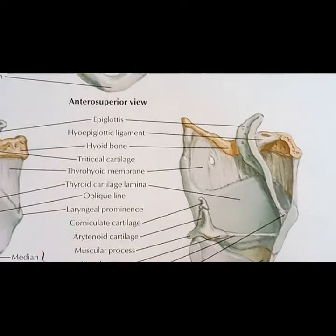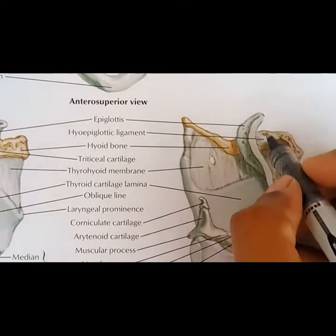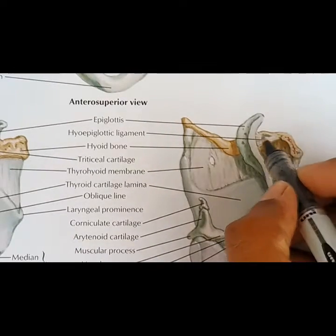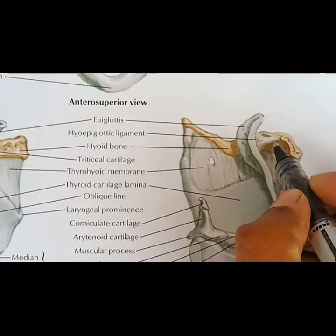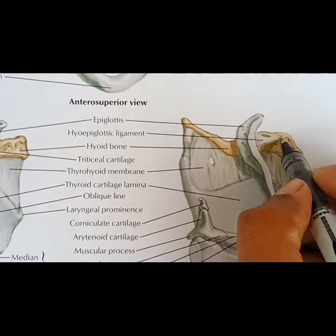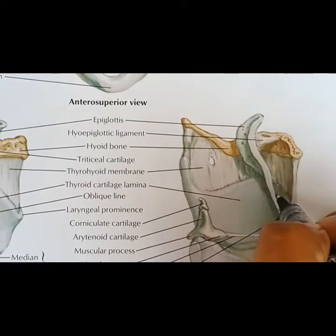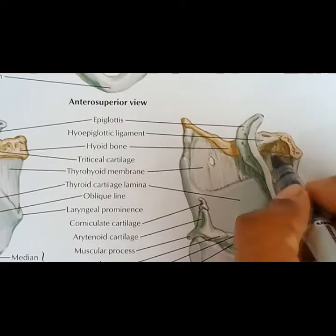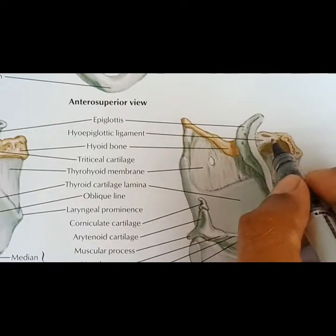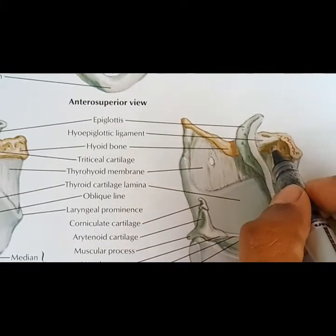The last one among the extrinsic ligaments and membranes is the hyoepiglottic ligament. It extends from the posterior part of the hyoid bone to the anterior part of the epiglottis at its upper end. This is the hyoepiglottic ligament.